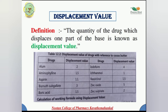The displacement value is defined as the weight of the medicament that displaces one part of the base. For example, the displacement value of zinc oxide in relation to cocoa butter is five — meaning five grams of zinc oxide displaces one gram of cocoa butter. This indicates that zinc oxide is heavier and occupies a smaller volume.